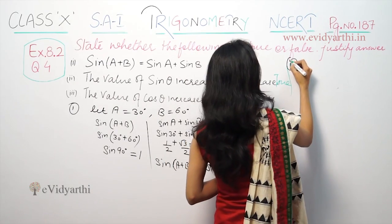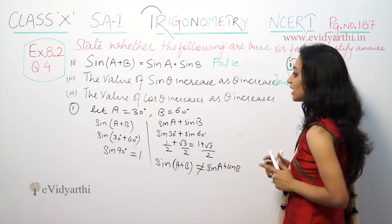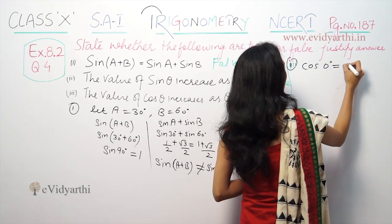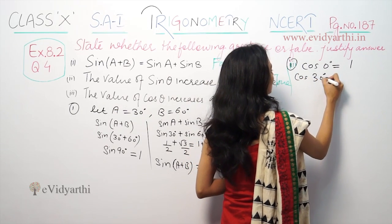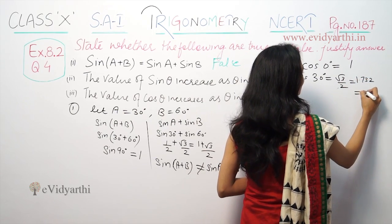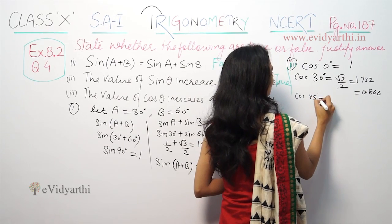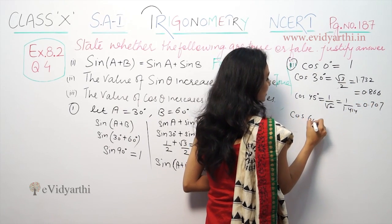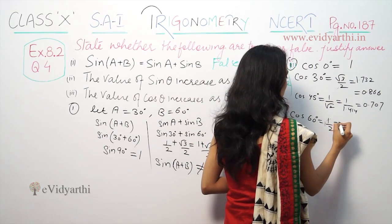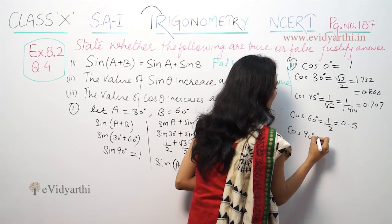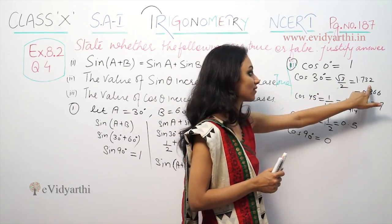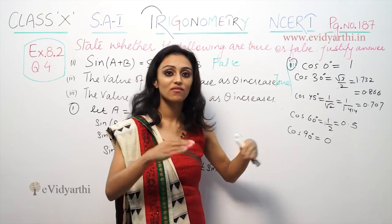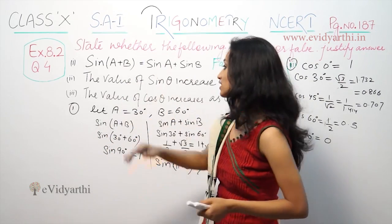Third part: the value of cos θ increases as θ increases. Cos 0° is 1. Cos 30° is √3/2, that means approximately 0.866. Cos 45° is 1/√2, approximately 0.707. Cos 60° is 1/2, that means 0.5. Cos 90° is 0. So cos values decrease as θ increases. This statement is false.